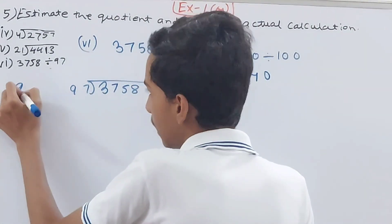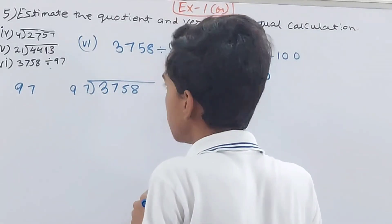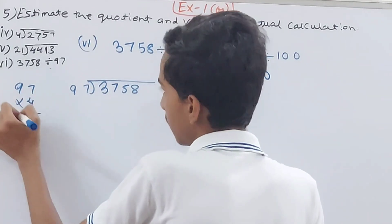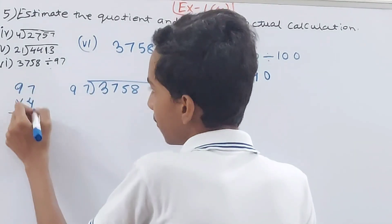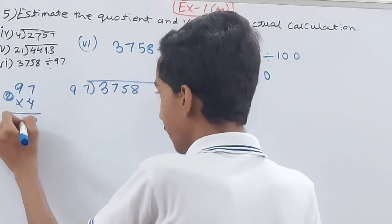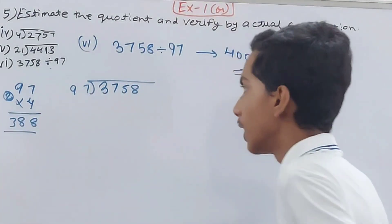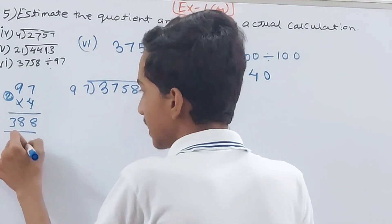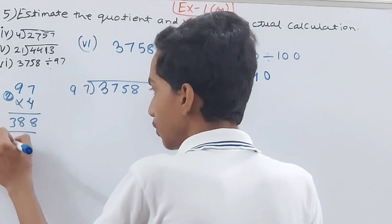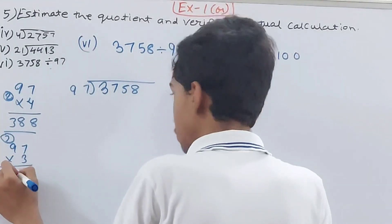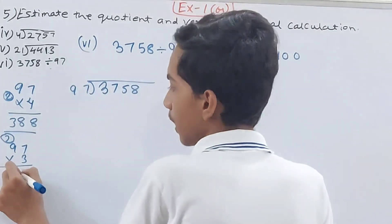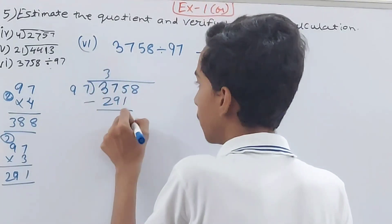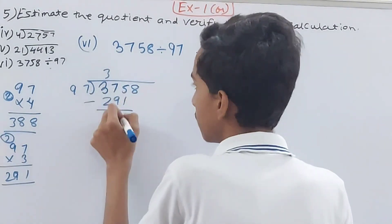For the actual 3758 ÷ 97: trying 3 times — 97 into 3 is 291. Minus 291 from 375, remainder 84. Bring down 8, giving 848. Try 9 times — 9 sevens are 63 carried over, 9 nines are 81 plus 6 is 87, giving 873 which is more.